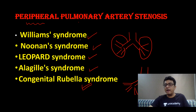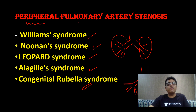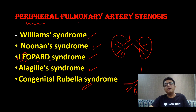Alagille syndrome involves peripheral pulmonary artery stenosis with abnormality of the bile duct — the patient has jaundice. Rubella syndrome we have covered in infectious disease. Leopard syndrome: L for lentigines (skin lesions), E for ECG abnormality, O for ocular hypertelorism, P for pulmonary stenosis, A for abnormality in the genitourinary tract, R for retardation (growth retardation), and D for deafness. Remember Leopard syndrome is associated with peripheral pulmonary artery stenosis.